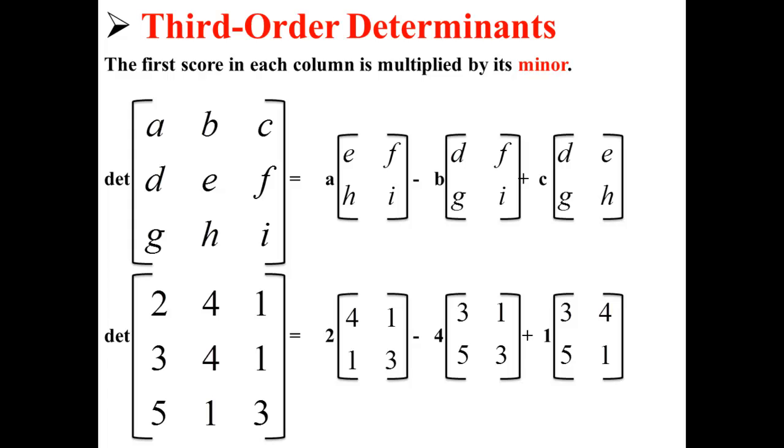Here, the third-order determinant is equal to 2 times the matrix 4, 1, 1, 3, minus 4 times the matrix 3, 1, 5, 3, plus 1 times the matrix 3, 4, 5, 1.